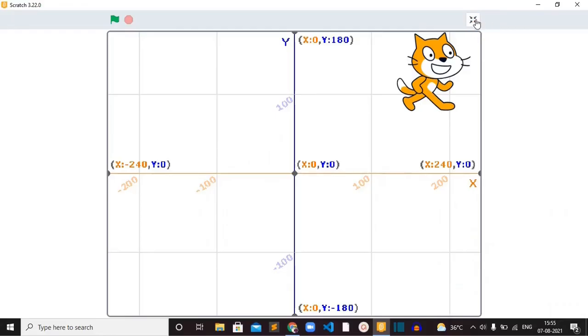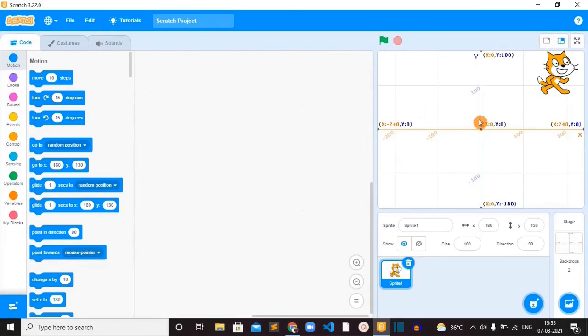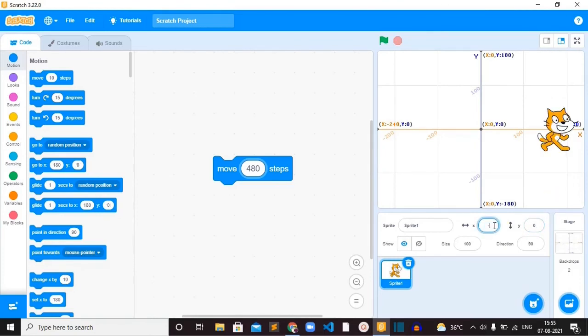For example I want the cat to walk across the stage from the leftmost value of x number line to rightmost value. I want the cat to walk 480 steps because the total number of pixel is 480 pixels. So I'll bring this move block here and instead of 10 I'm going to use 480. Okay so 480. So it is 480 steps. Okay and before that I'm going to set this cat position y to 0 and x to minus 240. So now the cat is in the leftmost value of x number line.